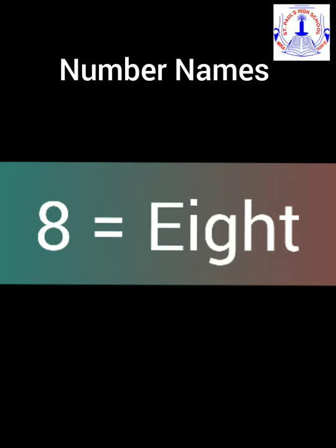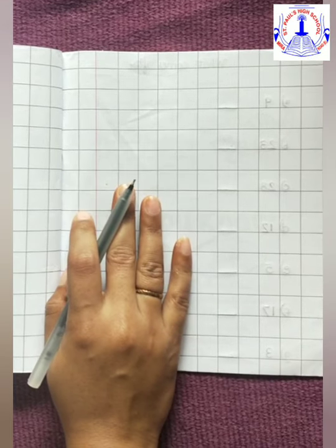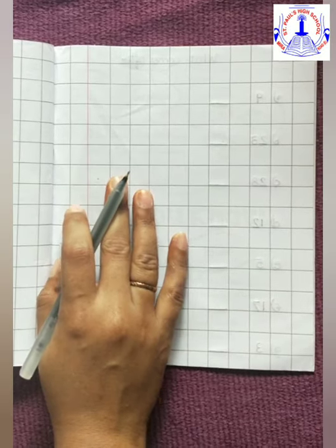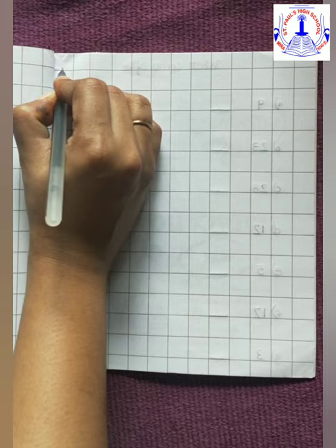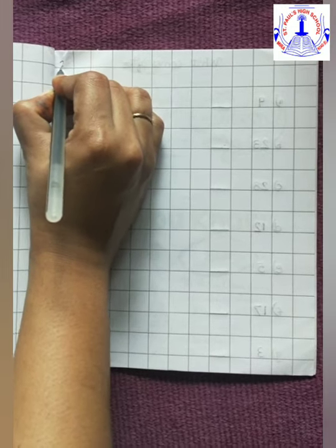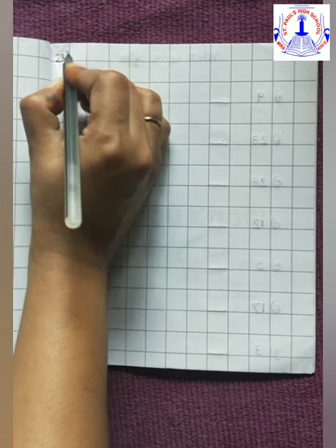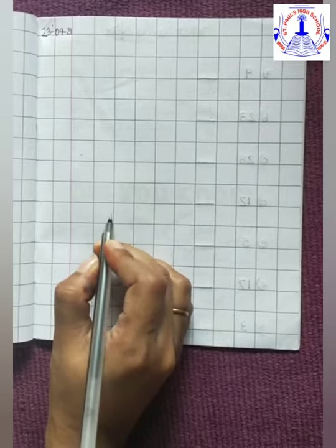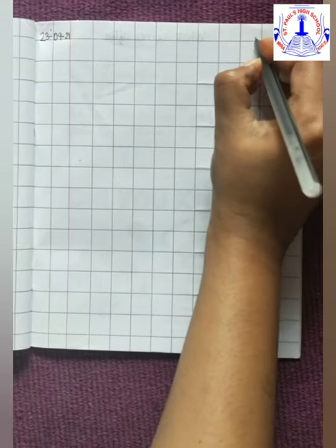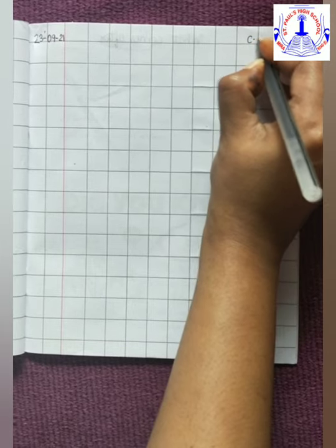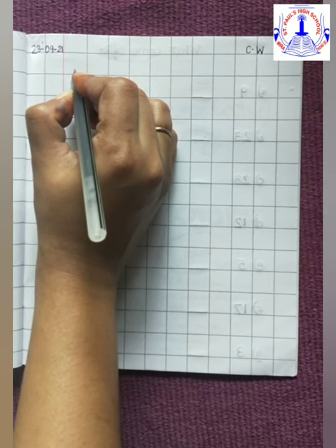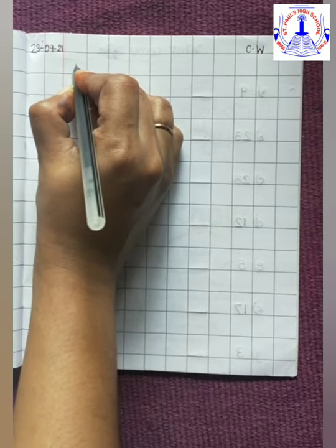So children, now let's start writing number name 8. So today we are going to write number name 8. Remove a new fresh page. Write here today's date, that is 23-09-21. Write here at the corner C.W. Now, after that, we are going to write number name 8.